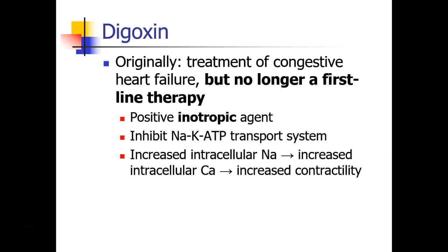Nevertheless, it's important to know that digoxin is a positive inotropic agent, so it increases contractility. It does this by inhibiting the sodium-potassium ATP transport system. When intracellular sodium is increased, this leads to an increase in intracellular calcium, which leads to an increase in contractility.